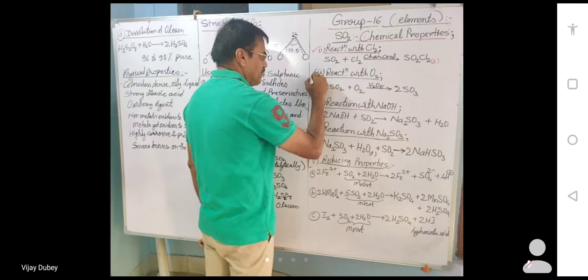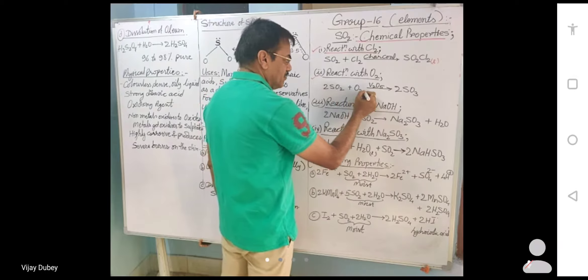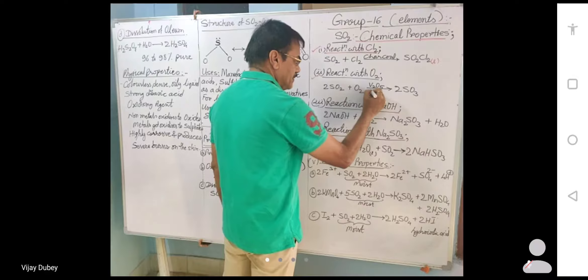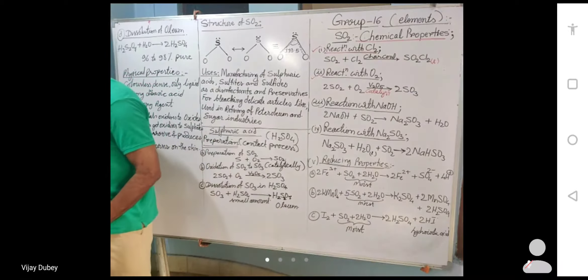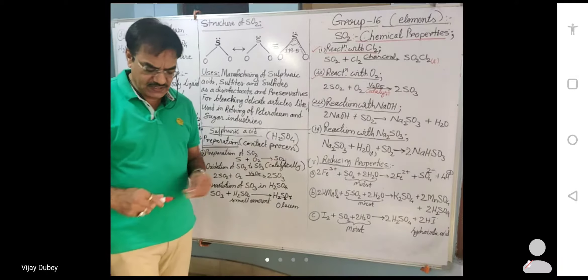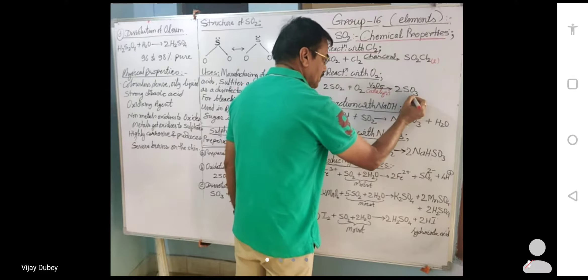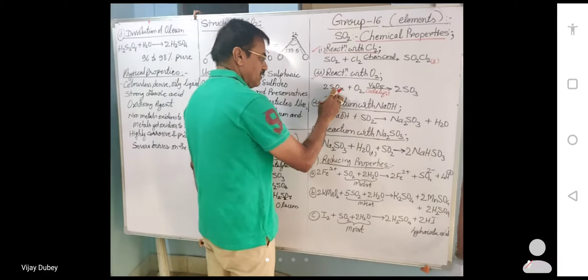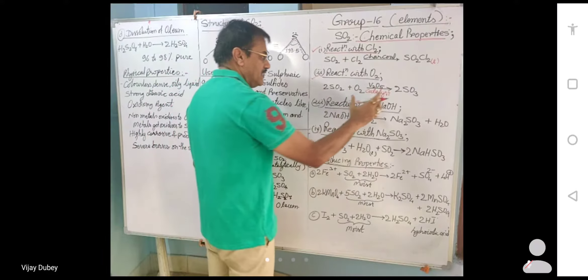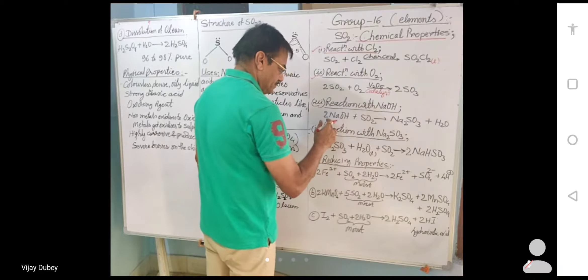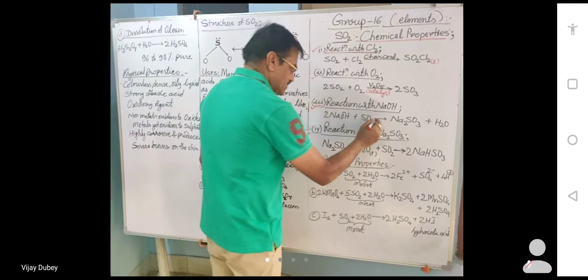The next reaction is with oxygen. The catalyst vanadium pentoxide helps in the conversion of SO2 into SO3. So sulfur dioxide gets converted to sulfur trioxide.